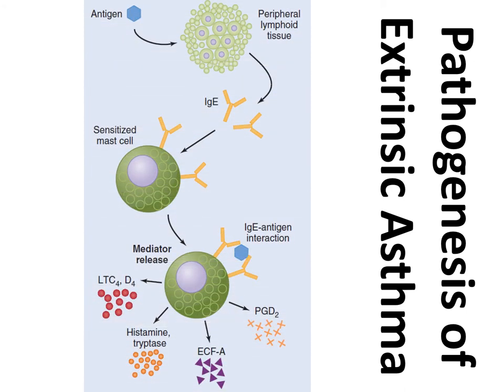In the pictorial representation, the antigen enters the peripheral lymphoid tissue, where IgE — the reagenic antibody — is generated. The mast cells get sensitized, and re-exposure leads to the release of histamine, leukotrienes, prostaglandins, and other mediators.